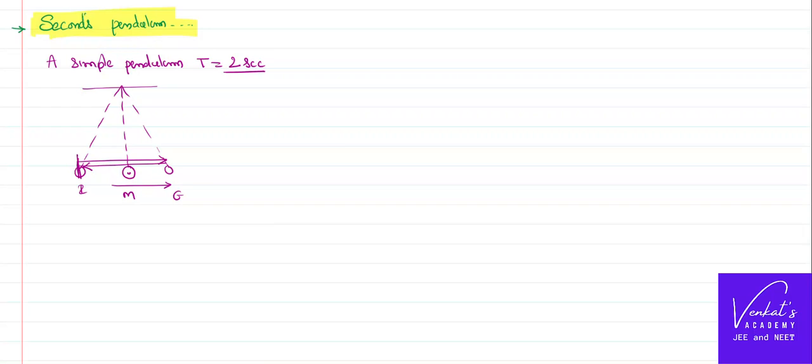Time taken to complete one oscillation is called time period. If that time period is 2 seconds, that means if you once leave the pendulum at a side it goes and comes back and if it takes a time of 2 seconds for one oscillation, then that kind of pendulum is called a seconds pendulum.